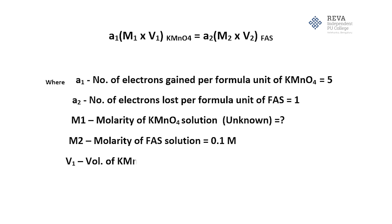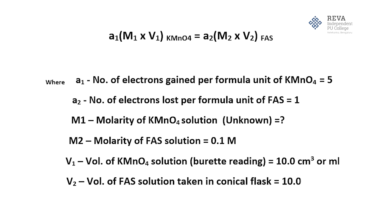V₁, volume of potassium permanganate solution which is the burette reading is equal to 10 cm³. V₂, volume of ferrous ammonium sulphate solution pipetted out is 10 ml.